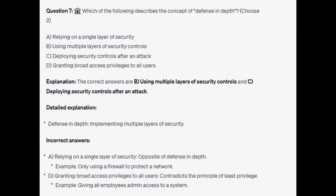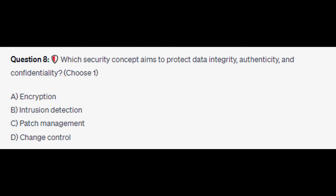The correct answer is B: using multiple layers of security controls. Defense in depth means implementing multiple layers of security. For the incorrect answers: relying on a single layer of security is the opposite of defense in depth — an example would be only using a firewall to protect the network. Granting broad access privileges to all users contradicts the principle of least privilege — an example would be giving all employees admin access to a system.